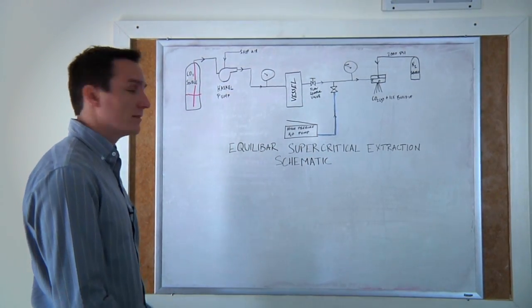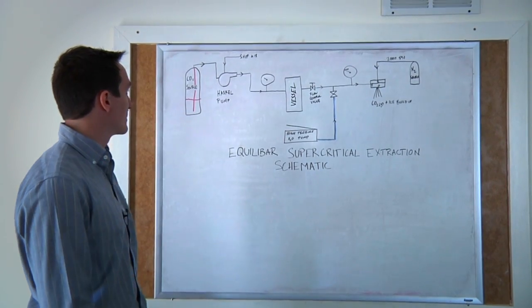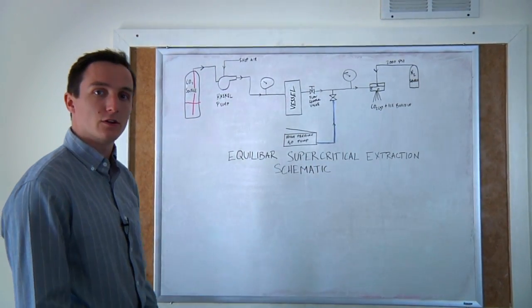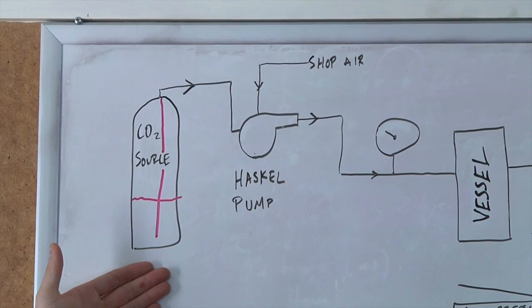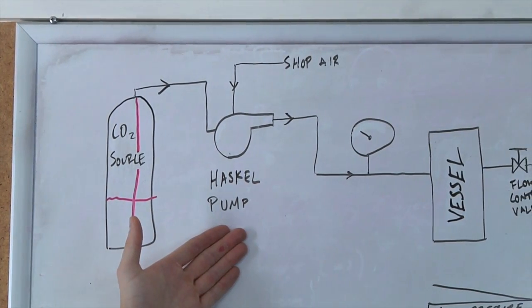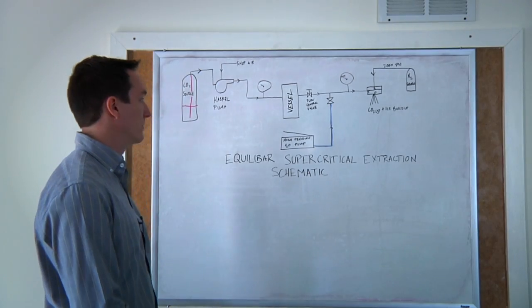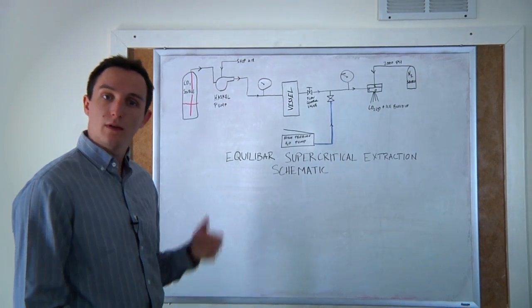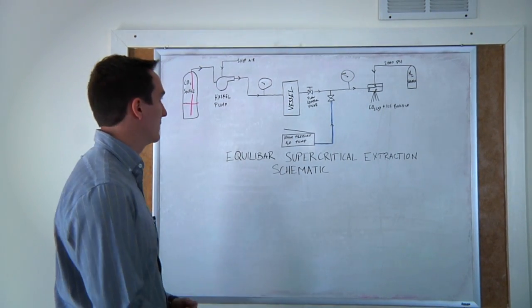So to start, we have our CO2 source pump, which has a siphon tube that draws liquid carbon dioxide from the bottom of the tank. It goes to our Haskell pump, which has a 25 to 1 ratio in which we plan to output the pump at around 2,000 psi.